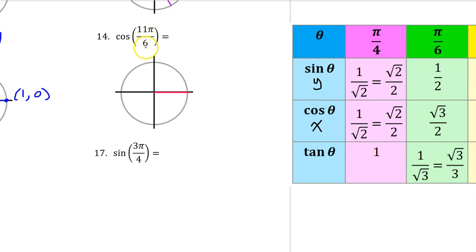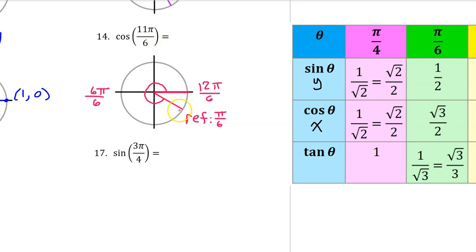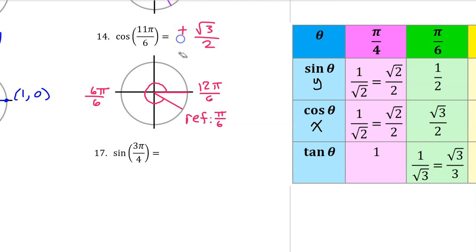Let's find the quadrant where 11 pi over 6 ends by thinking of pi as 6 pi over 6 and 2 pi as 12 pi over 6. Therefore, 11 pi over 6 will be 12 pi over 6 minus pi over 6, so 11 pi over 6 ends in the fourth quadrant with a reference angle of pi over 6. The cosine of 11 pi over 6 will be plus or minus the cosine of pi over 6, which is radical 3 over 2. Since cosine is the x-coordinate and x-coordinates are positive in the fourth quadrant, the answer is positive radical 3 over 2.